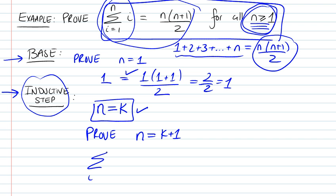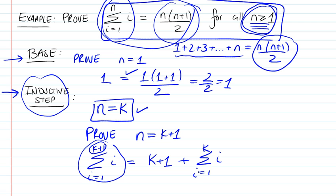So our summation becomes i equals 1 to k plus 1. We're trying to take this, the left-hand side, and bring it to the right-hand side. What we're going to do here is we're just going to take this element out, the last one. So it's going to be k plus 1 plus summation of i equals 1 to k of i. So I just took the last element out, that's all I did.